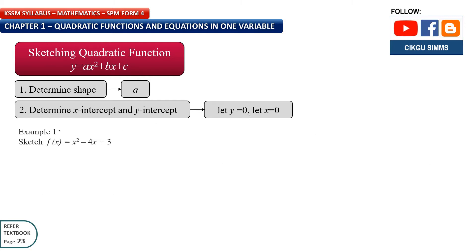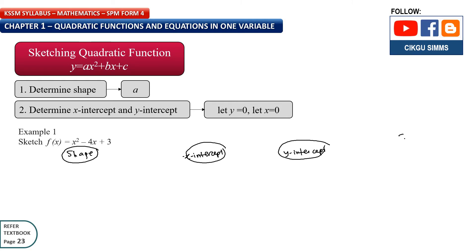Example 1: Sketch f(x) = x² - 4x + 3. First, determine the shape. Then find the x-intercept. Then find the y-intercept. For the shape, A is 1. Comparing to the general equation, the coefficient of x² is 1. Since A = 1 is greater than 0, the shape is a smiley face.